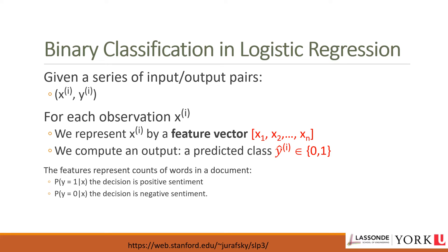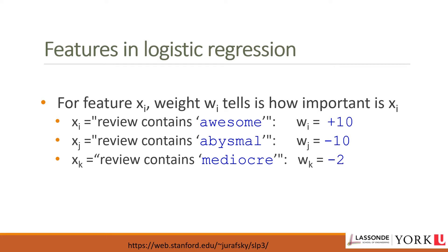For sentiment analysis, p(y=1|x) is the probability that the document has positive sentiment and p(y=0|x) is the probability of negative sentiment. Logistic regression solves this task by learning a vector of weights and a bias term from a training set. Each weight w_i is a real number associated with one input feature x_i, representing how important that feature is for the classification decision.